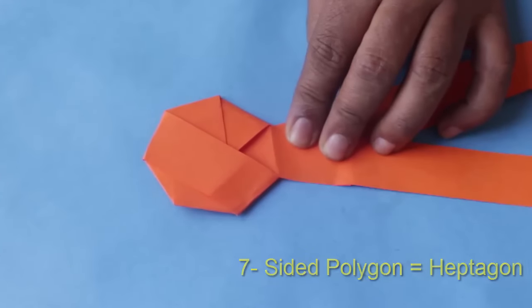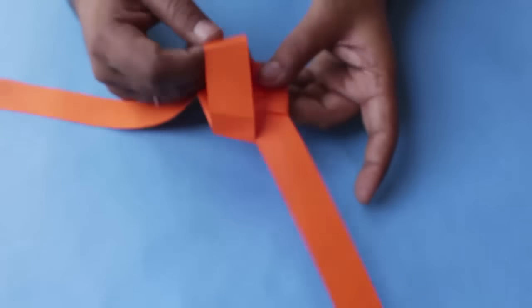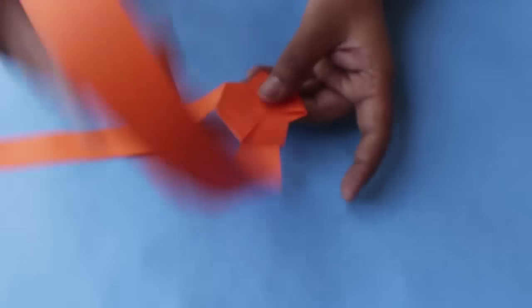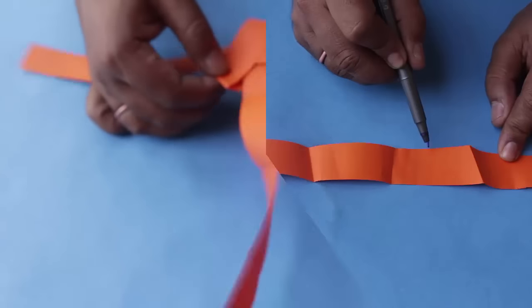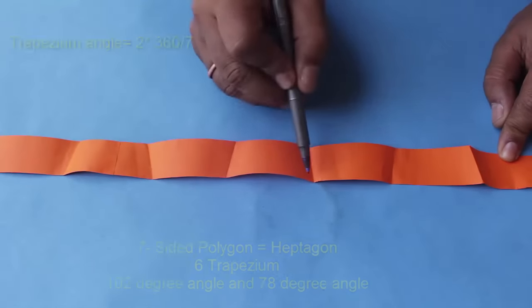Now the two ends of the strip are on different sides, and when you pull them there is no slack left. The whole thing becomes flat, and if you count the sides, you have a seven-sided polygon.